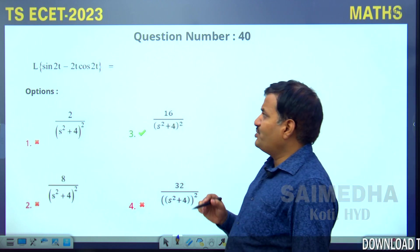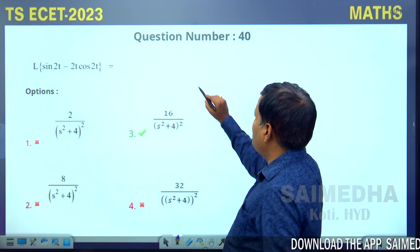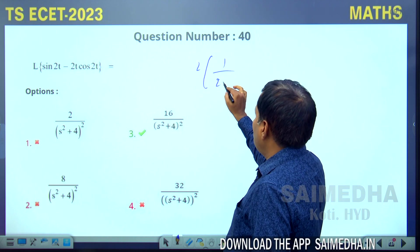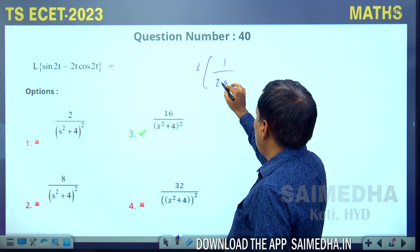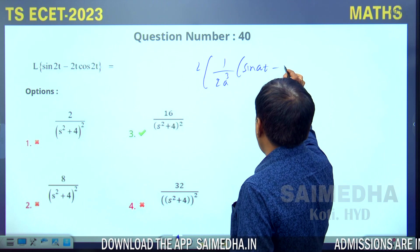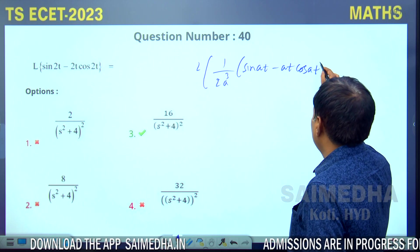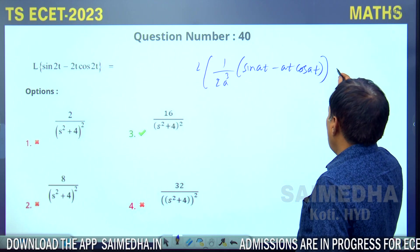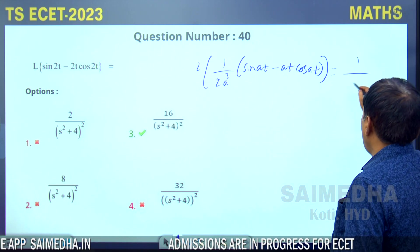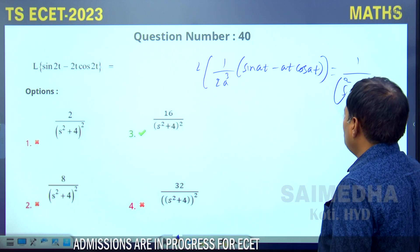The Laplace transform of sin2t minus 2t·cos2t. We have the standard formula: Laplace of (1/2a³)(sin(at) - at·cos(at)) equals 1/(s²+a²)².